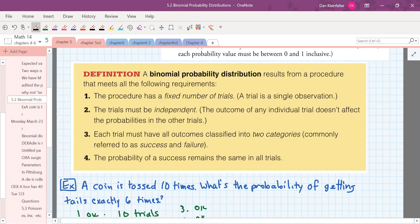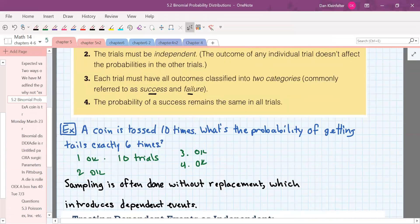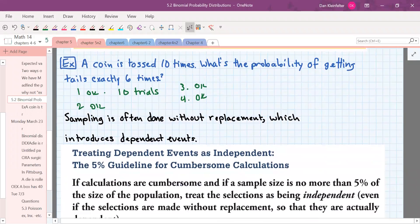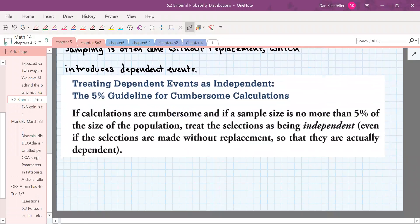The trials have to be independent. The outcomes for each trial can be classified into two categories, success and failure, and the probability of success remains constant throughout.